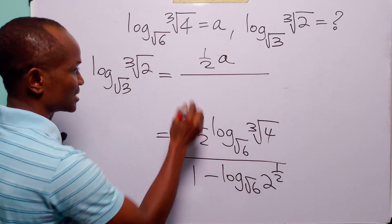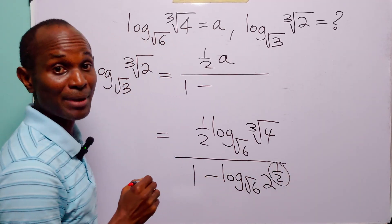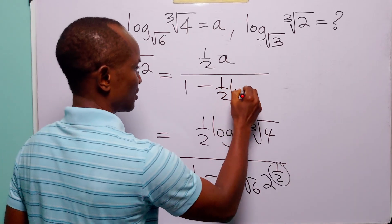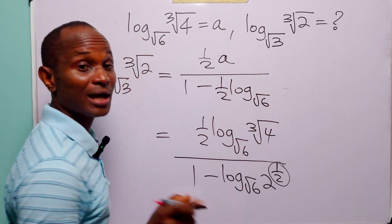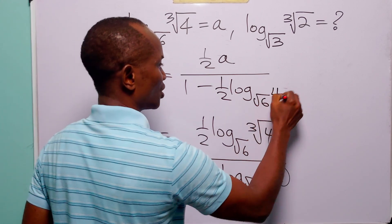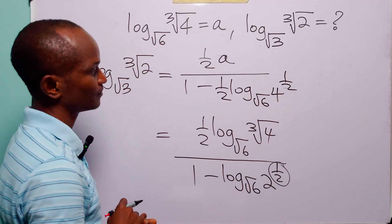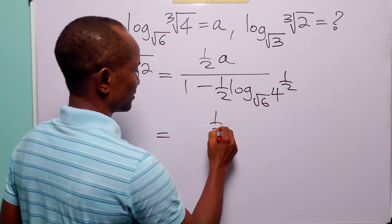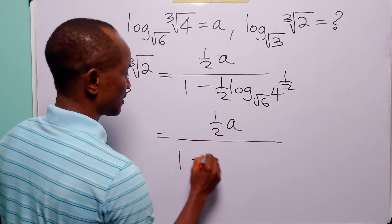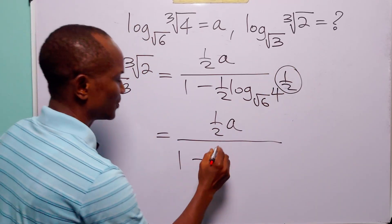In the denominator we have 1 minus, and again we apply the power rule. We bring down the exponent one half and write 2 as 4 to the power half. So we have one half times a divided by 1 minus one half times log to base root 6 of 4.